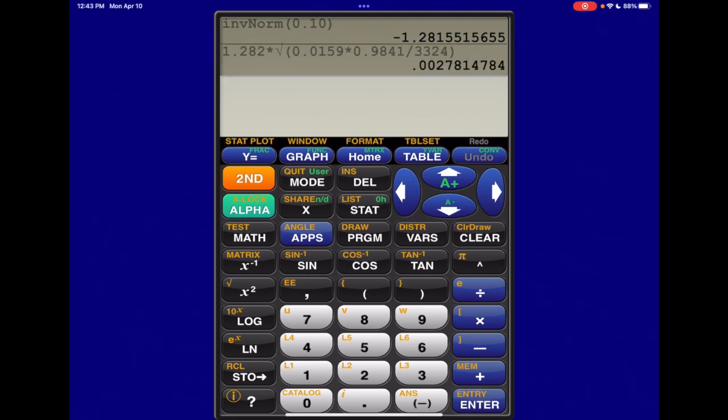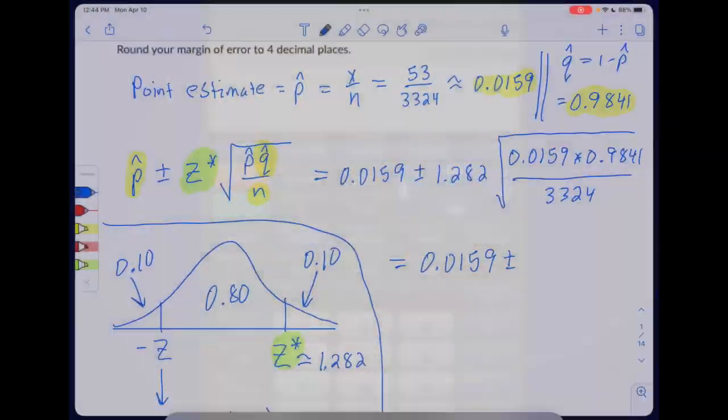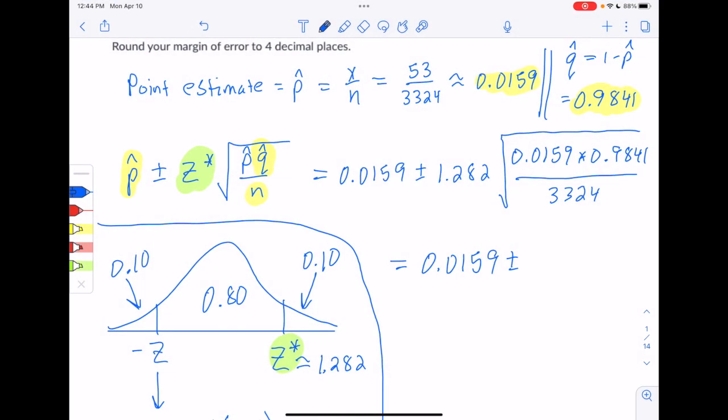And then we want to round that to match the number of decimal places we put on our point estimate. We put four decimals on our point estimate, so we'll put four decimal places on this margin of error number as well. So 0.0027, except the 7 is followed by an 8, so we'll round up to 0.0028. So plus or minus 0.0028.